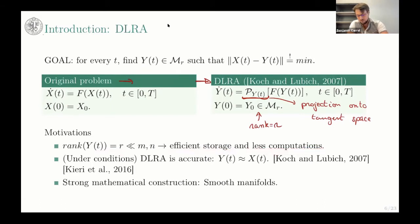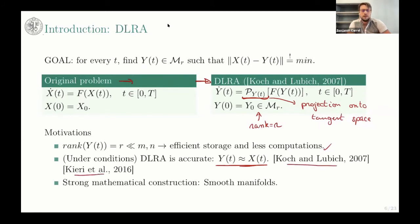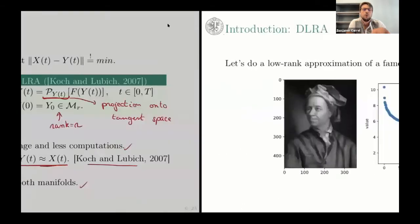By doing that, we ensure that the solution y is of rank r for every time t. Since it's low-rank, we can efficiently store the solution and do fewer computations. We know theoretically that dynamical low-rank approximation, under a few conditions, is accurate — meaning y is approximately equal to x with error bounds. This has been proven by Lubich and Kieri et al., and underpinned by a strong mathematical construction on smooth manifolds.